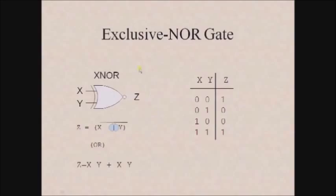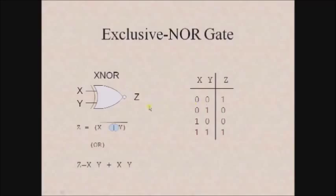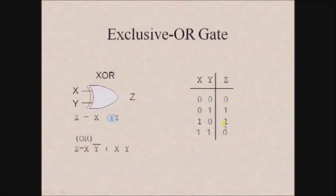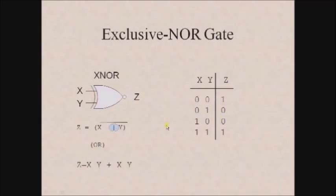Now let us see the exclusive NOR gate (XNOR). This is the symbol for representing it — it accepts more than one input and provides one output. The bubble symbol indicates it performs the inverse operation of the XOR gate. The output expression is z equals x XOR y whole complement, or z equals x·y plus x bar·y bar. The truth table shows output z as 0, 1, 1, 0 — replacing 0 with 1 and 1 with 0 compared to the XOR truth table.